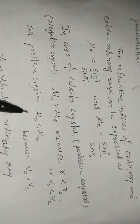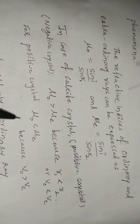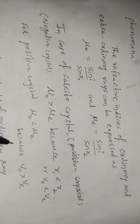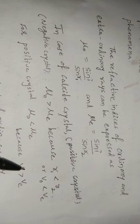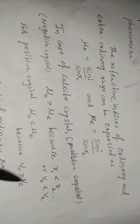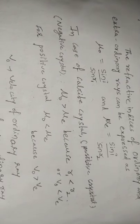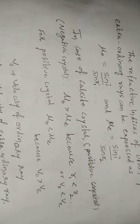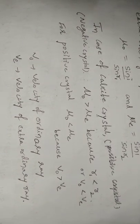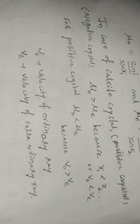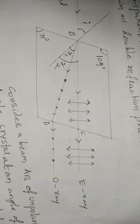In the case of positive crystals, the refractive index of the ordinary ray is always less than the refractive index of the extraordinary ray, because the velocity of the ordinary ray is greater than the velocity of the extraordinary ray. Examples of positive crystals are quartz and ferric oxide. Here, V_o is the velocity of the ordinary ray and V_e is the velocity of the extraordinary ray.